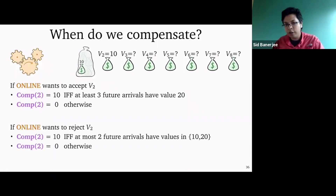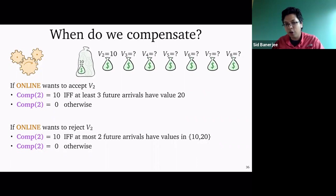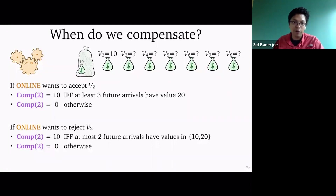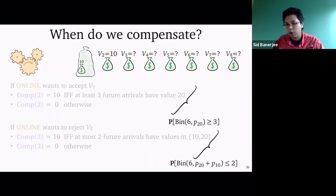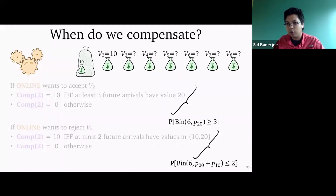Similarly, if I wanted to reject V2, the only reason for compensation is if at most two of the future arrivals have values which are 10 or 20. In other words, the only reason for feeling bad about rejecting a 10 is if this was the only 10 that would have given maximum value — if the total number of values which are either 10 or 20 in the future, including today's value, is at most 3. Once I have these two events I know exactly the probabilities: in the first case I ask whether a Binomial(6, p20) is greater than or equal to 3; in the second case whether a Binomial(6, p20 + p10) is less than or equal to 2.